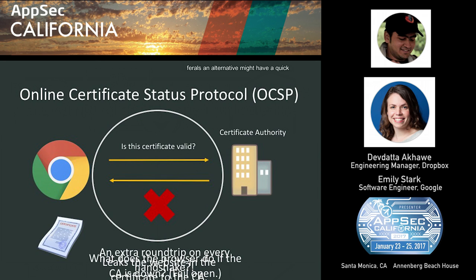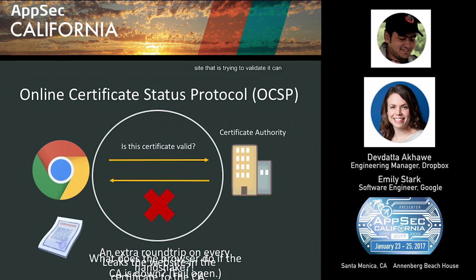An alternative that also occurred to some other people is the Online Certificate Status Protocol, or OCSP. With CRLs you download a whole list of revoked certificates. With OCSP, you instead do an online check for the particular certificate you're interested in. When the browser has a certificate it's trying to validate, it can go ask the certificate authority whether this particular certificate is valid, and the CA gives an answer for that specific certificate. The browser doesn't have to download information about certificates it doesn't care about. However — you can probably imagine there are many things wrong with this — we've now introduced a round trip on every handshake.